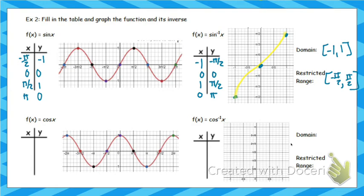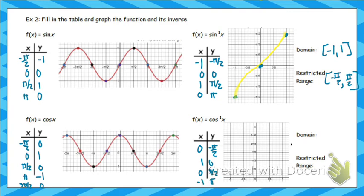For cosine: the original graph has points (−pi/2, 0), (0, 1), (pi/2, 0), (pi, −1), (3pi/2, 0). Switching x and y for the inverse, we plot those flipped points. After a certain point, the graph is no longer a function. So the domain of inverse cosine is [−1, 1] and the range is [0, pi] in order for it to be a function.